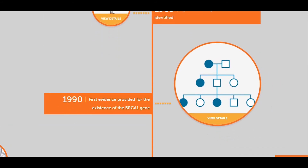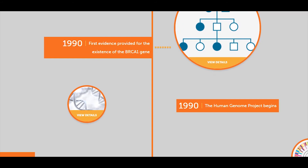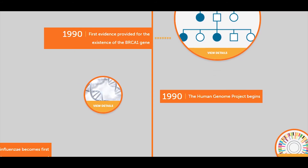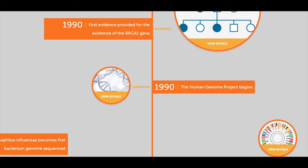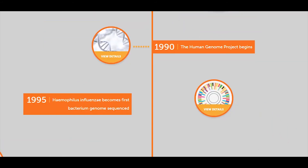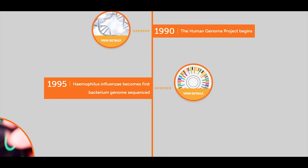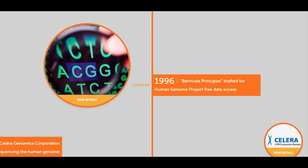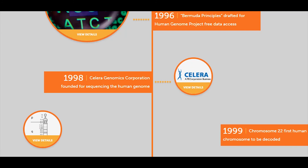In 1989, the cystic fibrosis gene mutation was identified. In 1990, first evidence was provided for the existence of the BRCA1 gene. Also in 1990, the Human Genome Project began. In 1995, Haemophilus influenzae became the first bacterium to have its genome sequenced. In 1996, the Bermuda Principles were drawn up on human genome project open data access. In 1998, Celera Genomics Corporation was founded for sequencing the human genome.